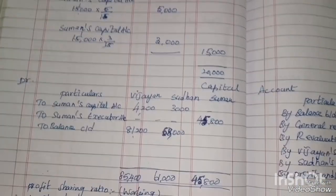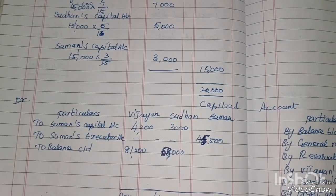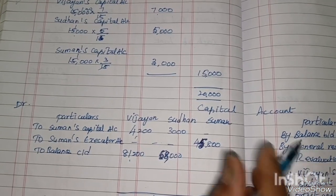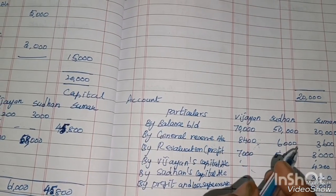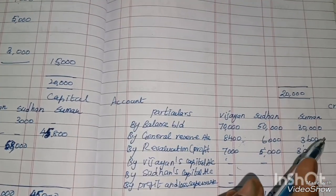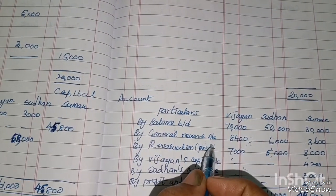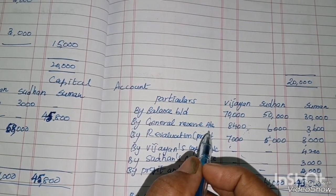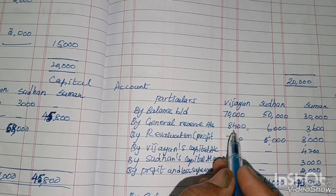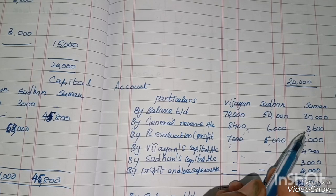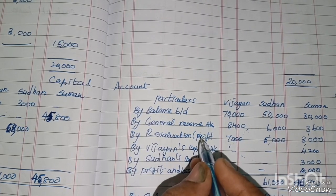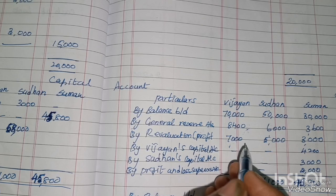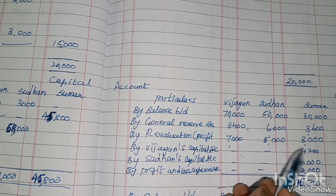Now prepare the capital account. On the credit side: by balance brought down — Vijayan 70,000, Sudhan 50,000, Suman 30,000. By general reserve — the amount of 18,000 is divided: Vijayan 8,400, Sudhan 6,000, Suman 3,600. By revaluation profit — Vijayan 7,000, Sudhan 5,000, Suman 3,000.